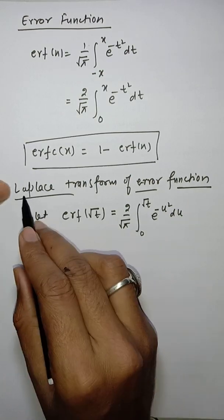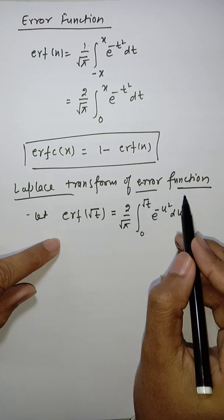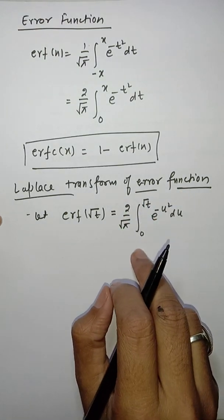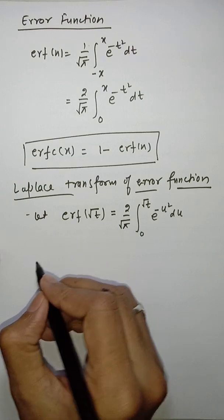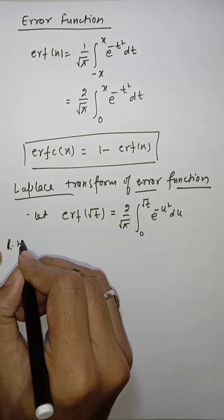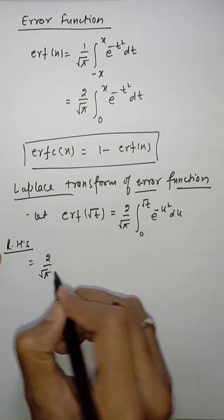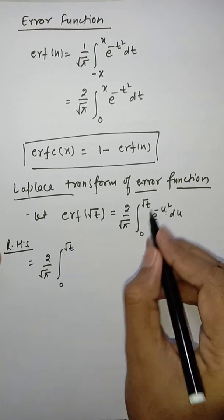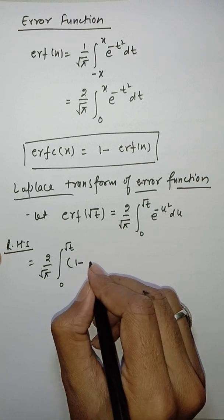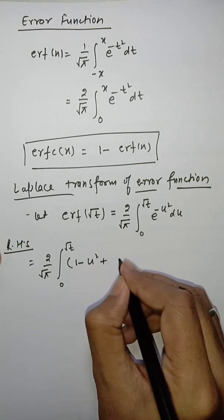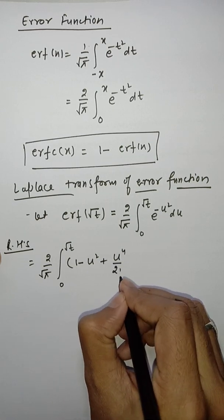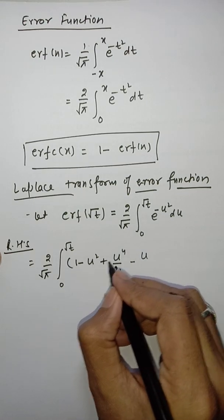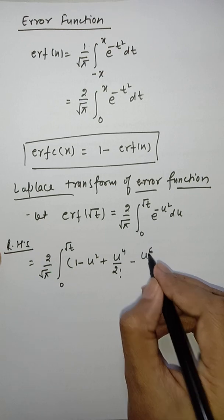Before deriving the Laplace transform of the error function, we first solve the integral on the right-hand side. This equals (2/√π) × integral from 0 to √t of the exponential series expansion: 1 − u² + u⁴/2! − u⁶/3! + and so on, du.